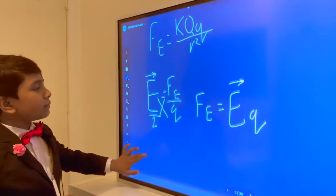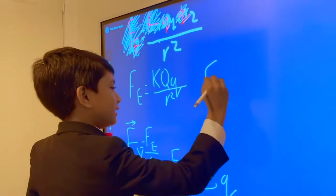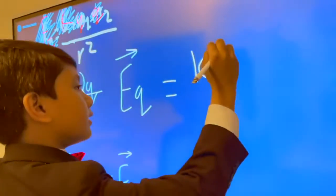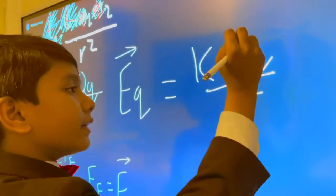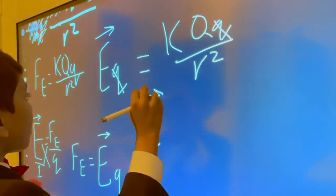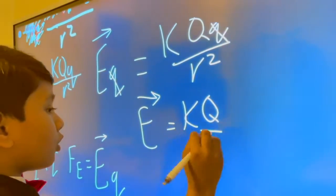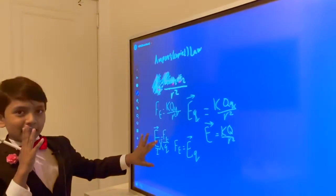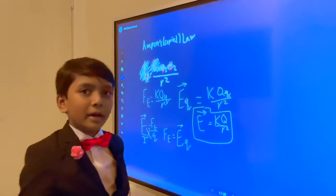And that gives us FE is equal to EQ. So that means that we can replace FE with EQ. And that gives us EQ equals KQQ over R squared. And then we will cancel out. And that gives us E equals to KQ over R squared.